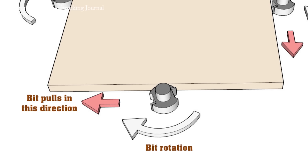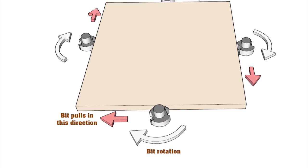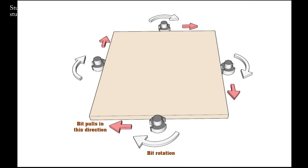So if you place that bit against the edge of the workpiece, the cutters will dig in and they'll try to pull the router from right to left. If you let it go all the way around the perimeter of the workpiece, it's going to want to pull you in a clockwise direction.